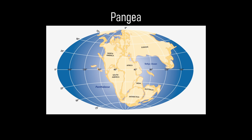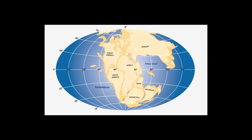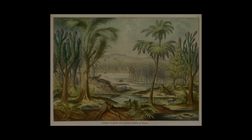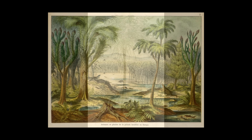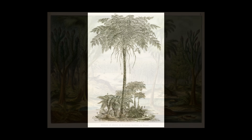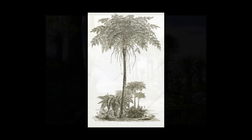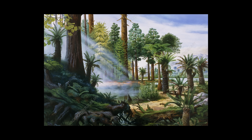And because so much land is parked in the tropics, you get swamps. Endless, sprawling, impossibly humid swamps. Now forget everything you know about forests. These are not trees as you'd recognize them. Picture giant ferns taller than houses. Club mosses — basically overgrown relatives of that decorative stuff you see in terrariums. It's an alien world wearing a green costume.